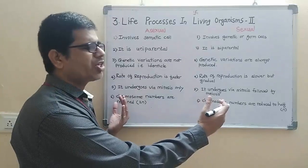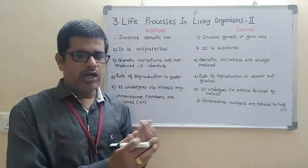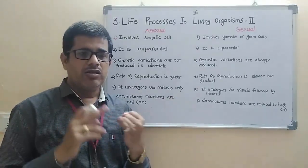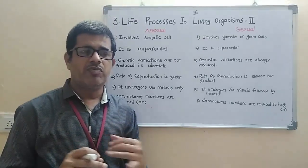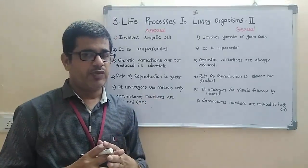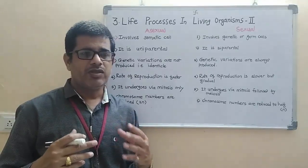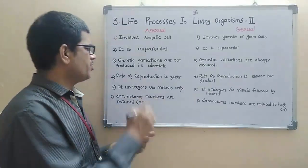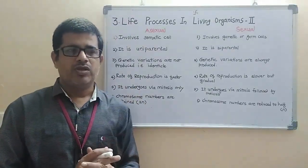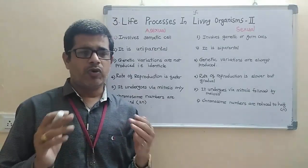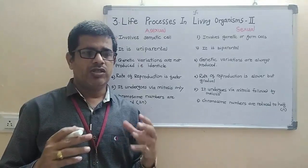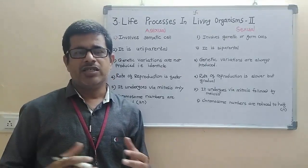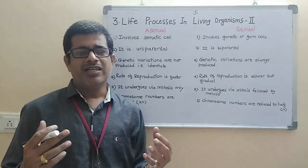This is the difference between asexual and sexual reproduction. Regarding the advantages and disadvantages of asexual reproduction: the advantage is that it is faster, and the disadvantage is that there is no genetic recombination, so the progeny is identical. The best advantage is speed, and the main disadvantage is the absence of genetic variation.